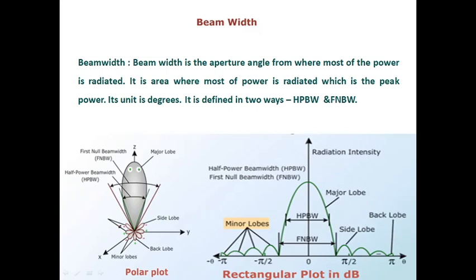Hi viewers, in today's class we are going to discuss antenna parameters. In the previous class we discussed two parameters — beam area and beam efficiency. The continuation for that is beam width. Beam width is nothing but the aperture angle from where most of the power is radiated.